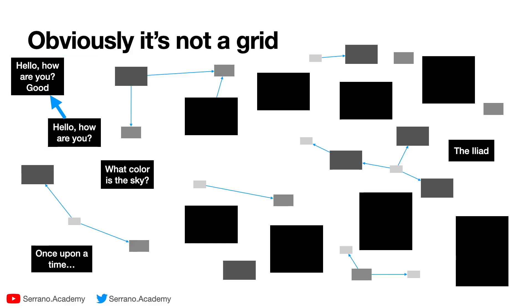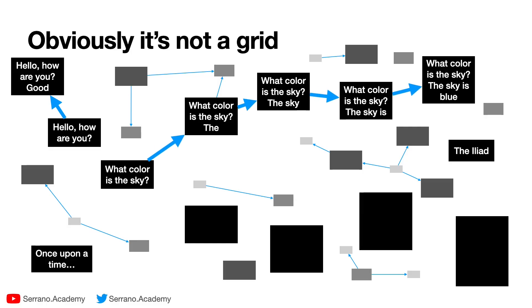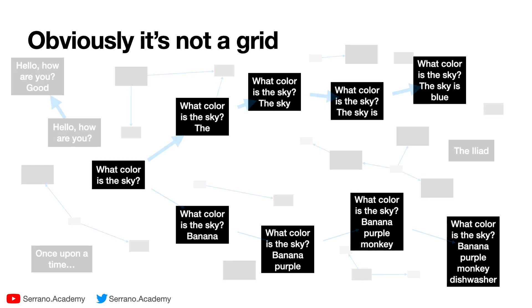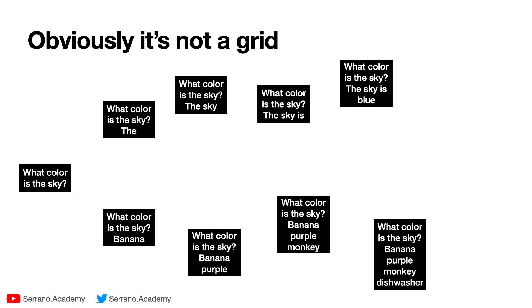Now let's look at two chains that follow the sentence 'what color is the sky?' One of them is over here, which ends up with 'what color is the sky? the sky is blue'. Since this is a sensible sentence, then it has thick arrows. Now there's also this one over here, which says 'what color is the sky? banana purple monkey dishwasher'. That's not a very sensible sentence, so we have very thin arrows for very low probabilities of walking in this path. And now let's look at these two scenarios.